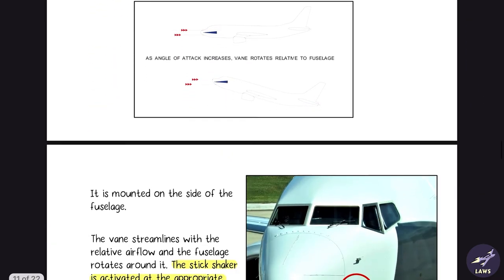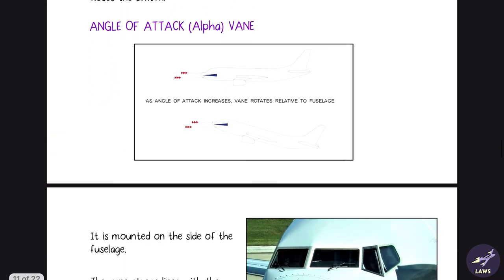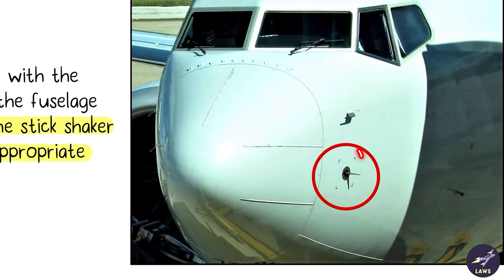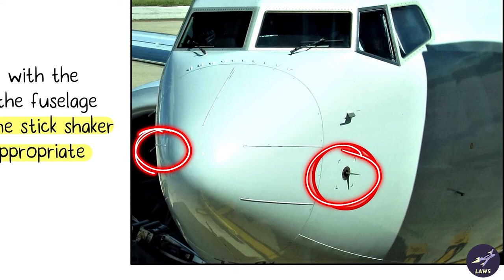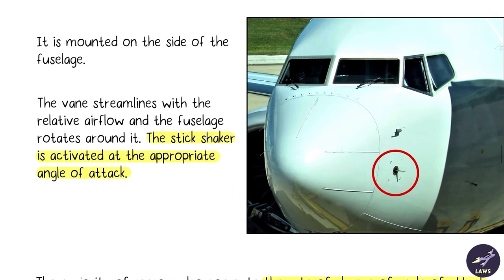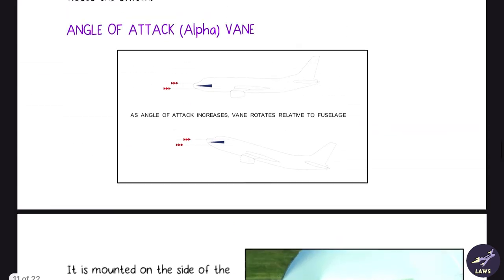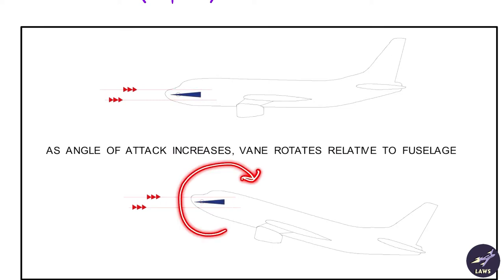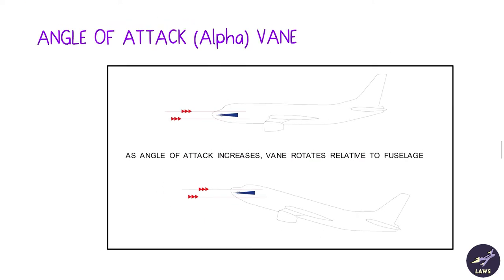In modern airliners, an angle of attack vane — or alpha vane — is used, with one on either side. This vane remains in place while the aircraft rotates around it. Whenever the angle of attack reaches a particular limit, it gives out a warning.